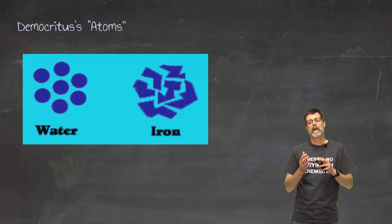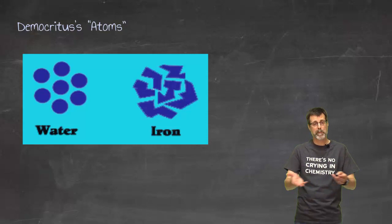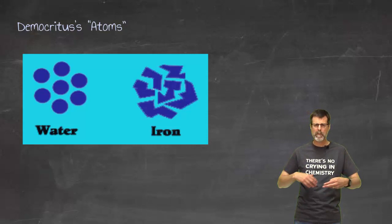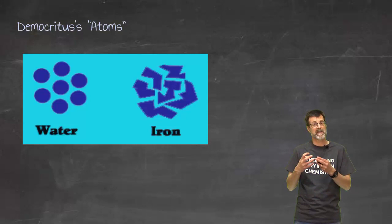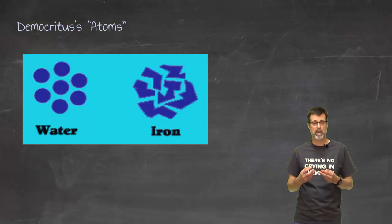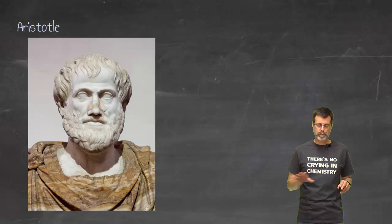For example, he said that water, because water flows, he envisioned that the particles of water, the atoms of water, were going to be spheres so they could easily roll, which would give water the ability to flow. Whereas iron as a solid holds on to other atoms quite strongly, so he had this idea of these little hooks in it.